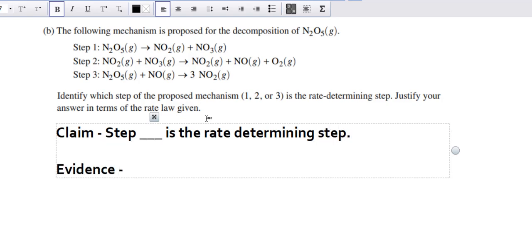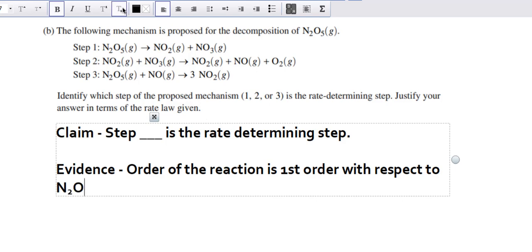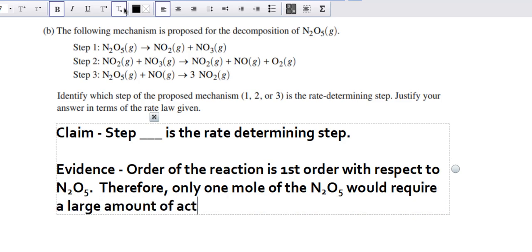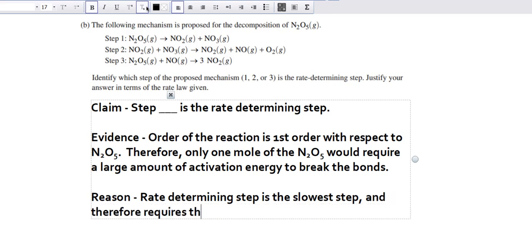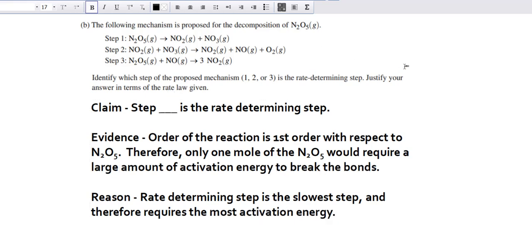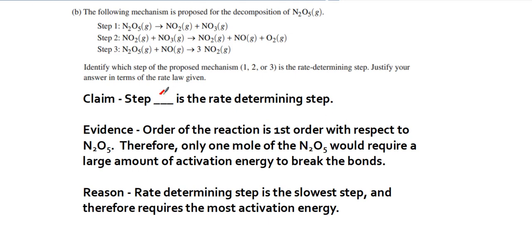My evidence is that the order of the reaction is first order with respect to N2O5. Therefore, only one mole of the N2O5 would require a large amount of activation energy to break the bonds. The reason is that the rate-determining step is the slowest step and therefore requires the most activation energy. And so that means if we're only looking for one mole, that means step 1 is the rate-determining step.